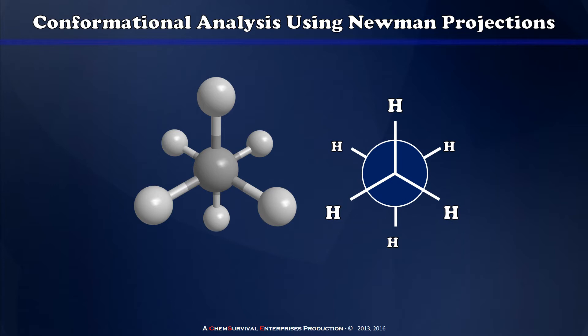The real utility of the Newman projection is that it shows us the atoms in the front indicated by lines for their bonds that go all the way to the center, and atoms in the back by their bonds being clipped off at the perimeter of the circle. By looking at this I can get an exact measurement of a dihedral angle.